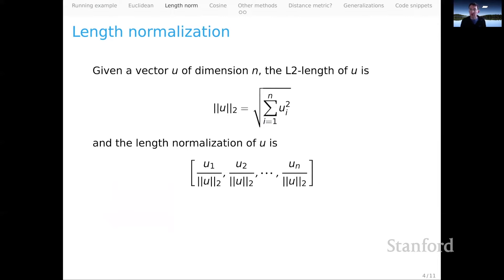As a stepping stone toward cosine distance, which will behave quite differently, let's talk about length normalization. Given a vector U of dimension n, the L2 length of U is the sum of the squared values in that vector, and then we take the square root. That's our normalization quantity. The actual normalization of U involves taking each one of its elements and dividing it by that fixed quantity — the L2 length.